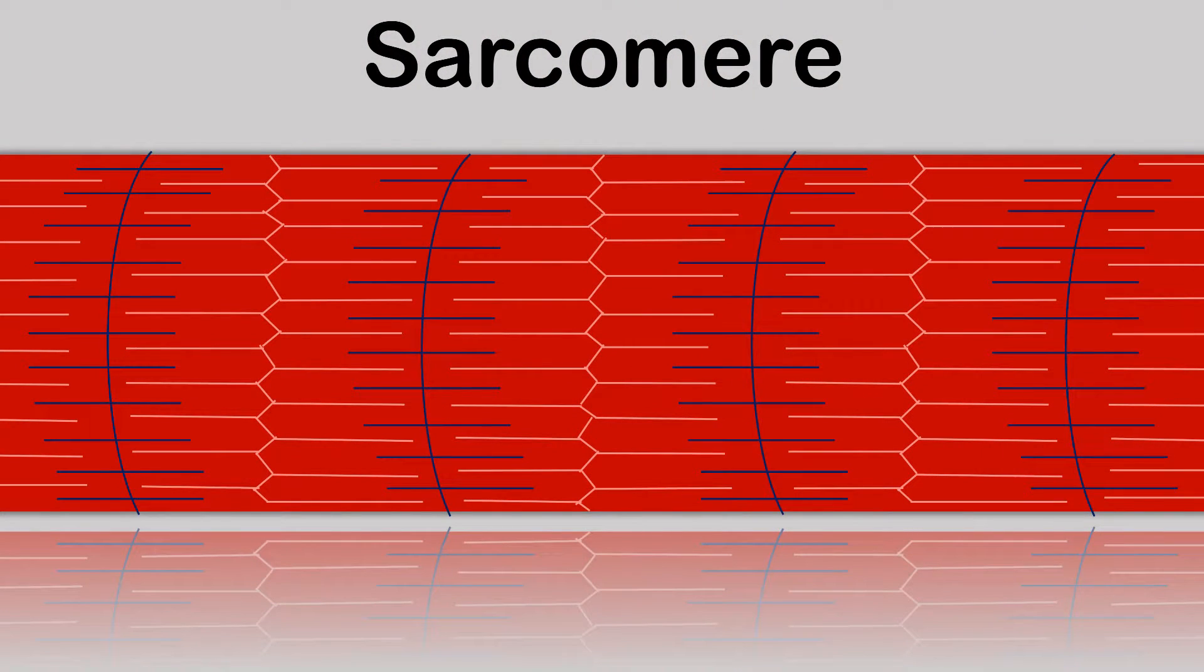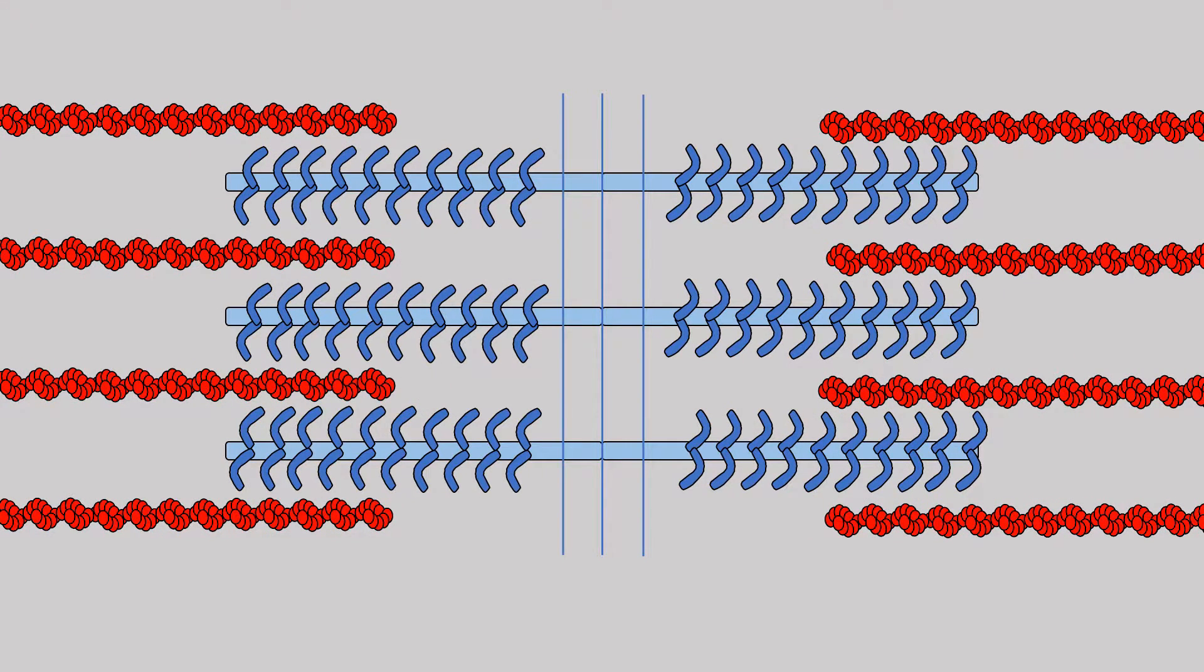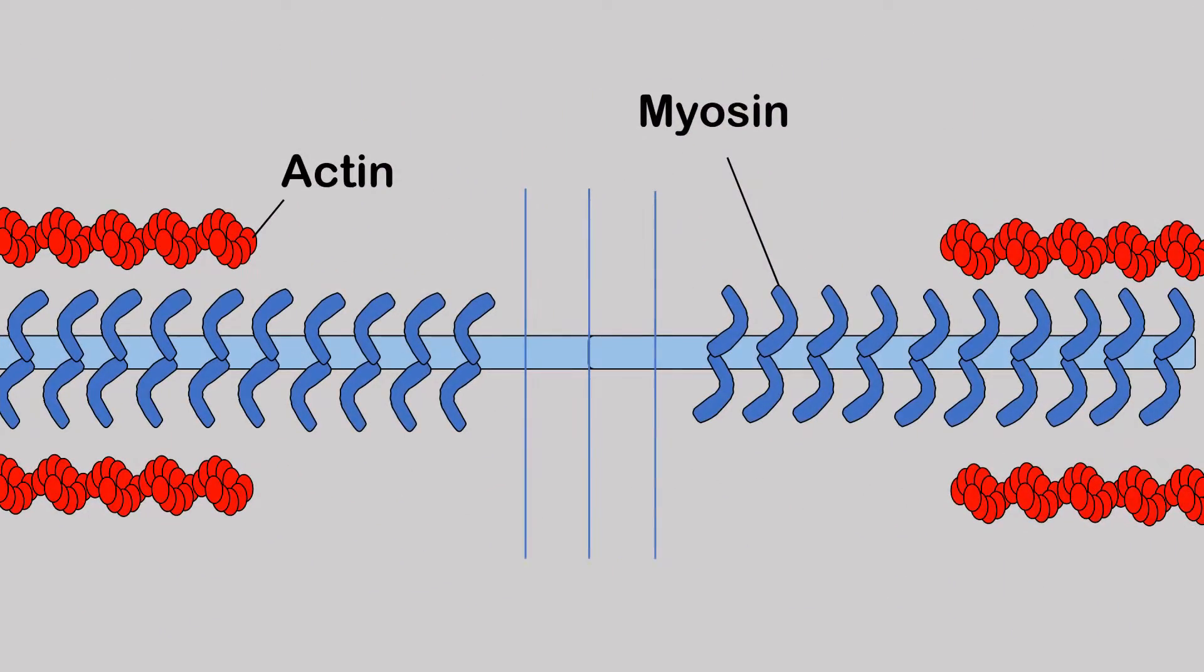So we got down to the sarcomere last video, the most basic unit of the skeletal muscle. If we were to zoom in a little bit more, it would look something like this. Two proteins that are fundamental to the muscle contraction are called actin and myosin. If we just take a look at one sarcomere unit, we can see that the actin is the red circular proteins, whilst the myosin look like hooks almost on a rod.